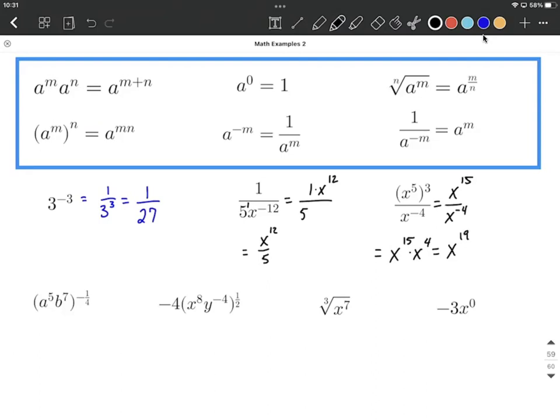All right, moving down to the bottom left, we have a to the 5th, b to the 7th, all raised to the negative 1/4th. The first thing I'm going to do here is we have an exponent on the outside. I'm going to multiply that by each one of the exponents on the inside.